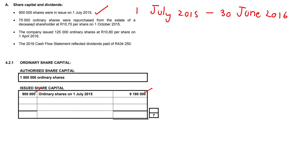75,000 ordinary shares were repurchased from the estate of a deceased shareholder at R10.70 per share on the 1st of October 2015. We're not going to use the R10.70 — that total amount goes into our cash flow statement. We need the ASP, the average share price.